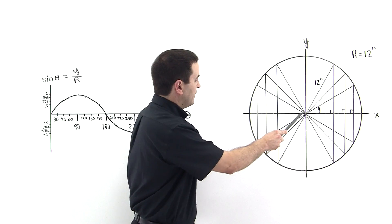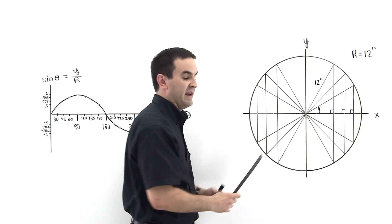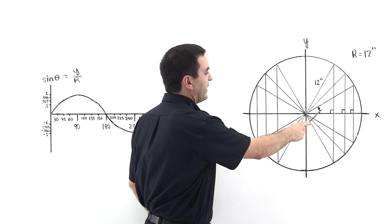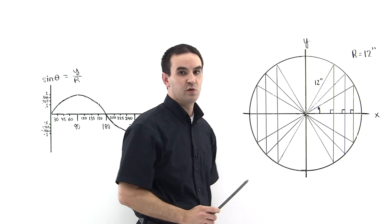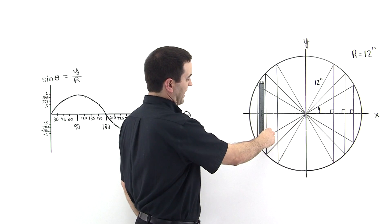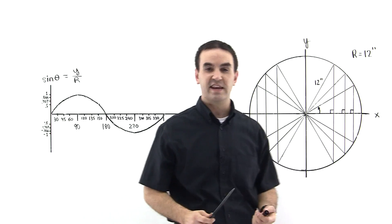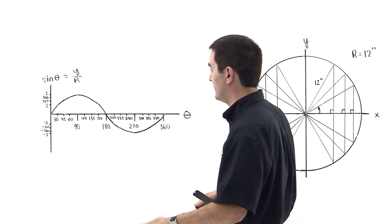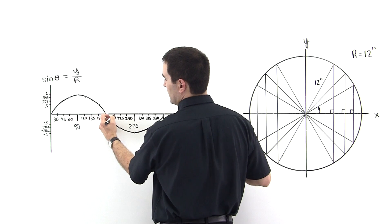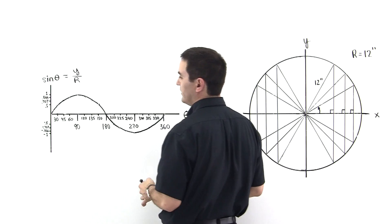Take a look at this triangle here. It has an angle of 210 degrees — that's 180 plus 30. We measure the height and it's 6 inches, but it's below the x-axis, so it's negative 6. Negative 6 divided by 12 is negative 0.5. We come out to 210 degrees on the graph, and lo and behold, it's right there at negative 0.5.